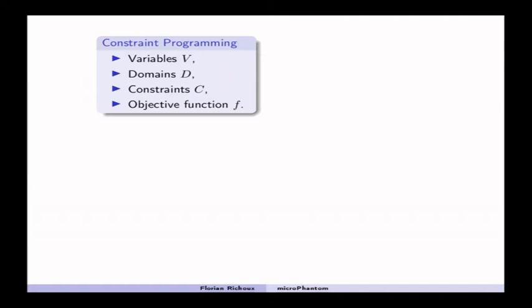So, I modeled the unit production problem in constraint programming with a very classic model. So, I have my variables, my domain, I have some constraints telling me, for instance, that I cannot spend more money than I have. And I have an objective function f that I want to maximize.